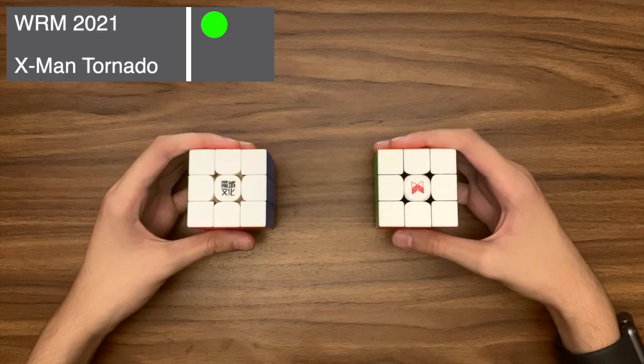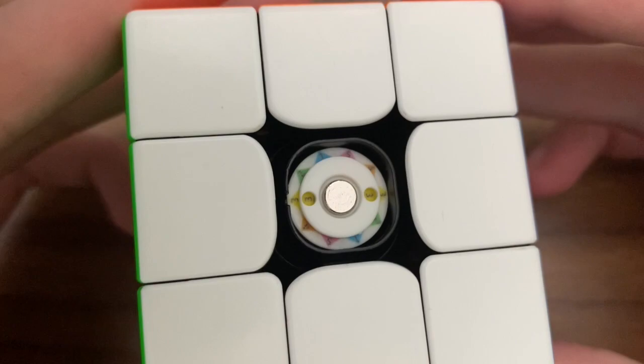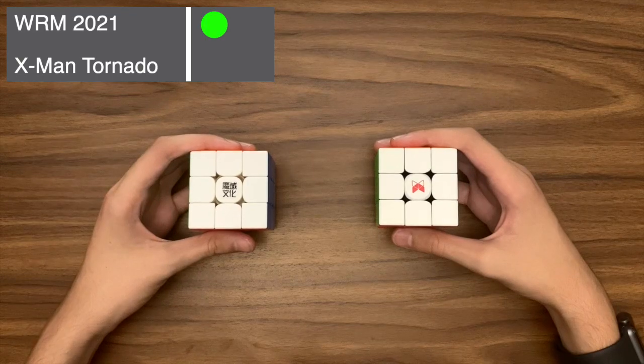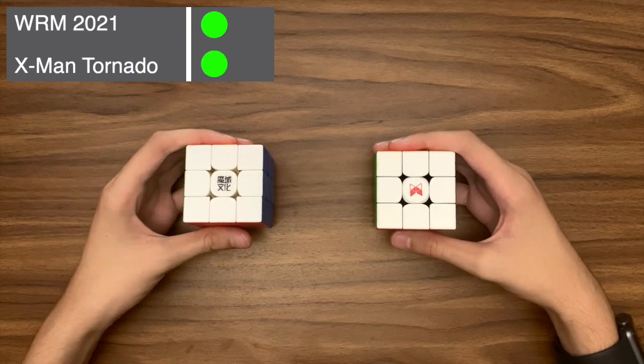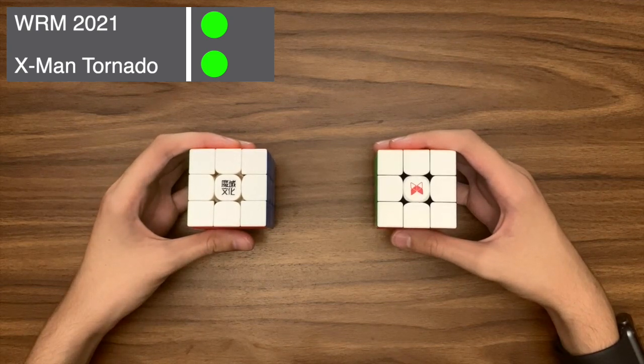Next, we have customization. And this is a clear win for me. The Tornado has so many more options and can also be adjusted so much easier than the WRM, which now ties up these two cubes. And finally, we have value for money. This may be controversial because I know how many people like the Tornado, but despite it being cheaper,